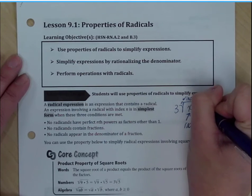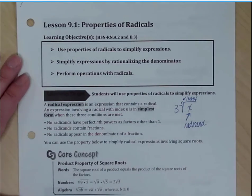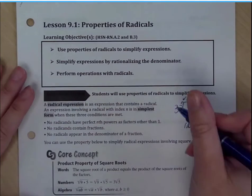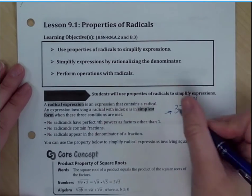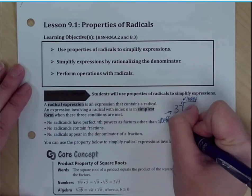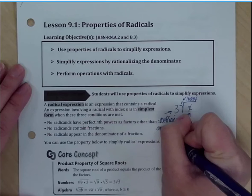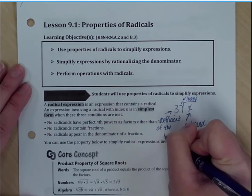This is the index. And for this unit, we're going to only be doing square roots. So you will not see a number there because it will automatically default to square roots. The three in front is what we call the coefficient. So this is the coefficient of the radical.